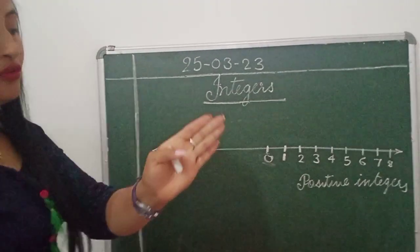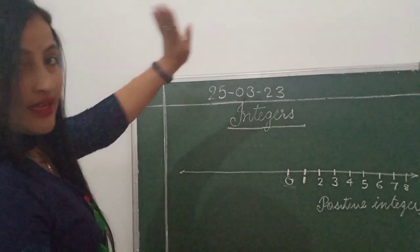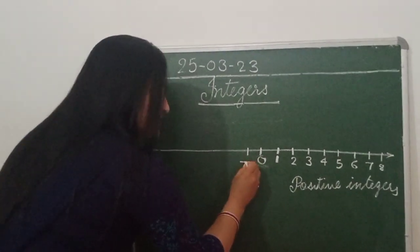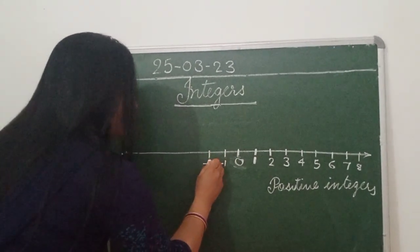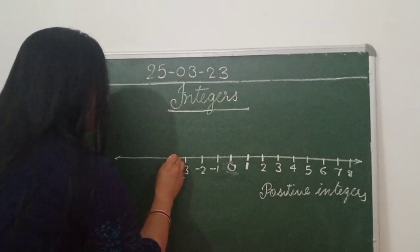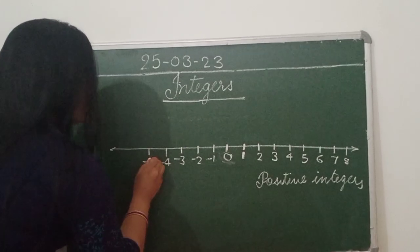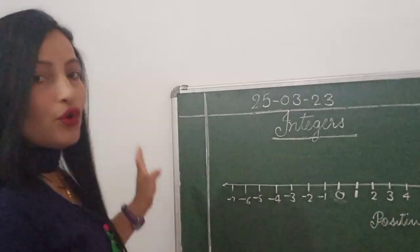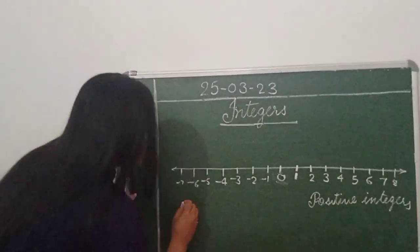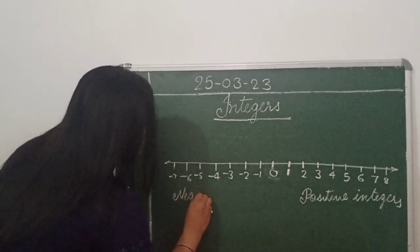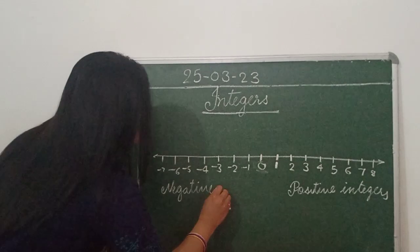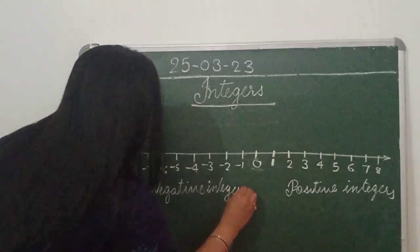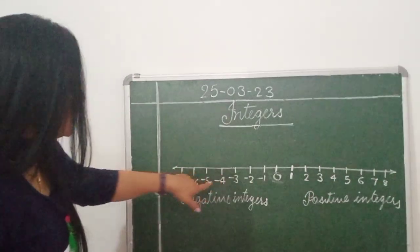And now when we move to the left hand side — this is my left hand — we give the sign minus. Minus 1, minus 2, minus 3, minus 4, minus 5, minus 6, minus 7. Like this we move. And these are the negative integers.